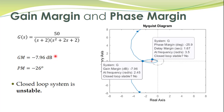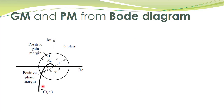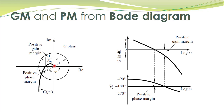We can also read gain margin and phase margin from Bode diagrams, since Bode diagrams and polar plots convey the same information. The Bode diagram consists of two graphs: one for magnitude frequency response and one for phase frequency response — information that the polar plot depicts in a single graph.